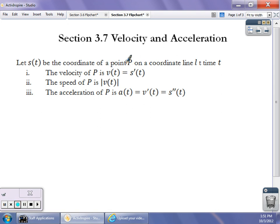And the coordinate point P is moving on this plane so that the position S of T is given to you at any given time as some sort of function. So the velocity of P is going to be the derivative. We write it as V of T, velocity over time, is the first derivative of the position function.